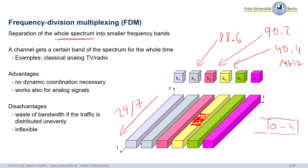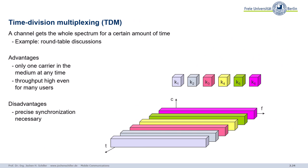Classical frequency division multiplexing is also used for fiber optics, where it's called Wavelength Division Multiplexing (WDM) — you use different colors of light to transmit data on the same fiber. Frequency and wavelength are essentially the same concept. Moving on: Time Division Multiplexing, or TDM, is something very typical for digital systems.